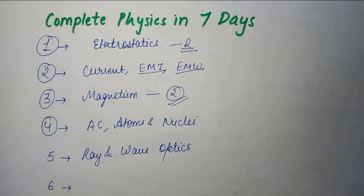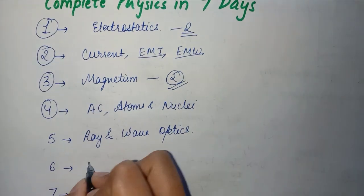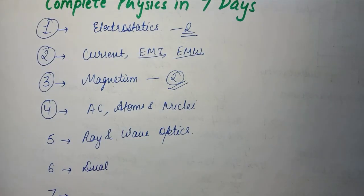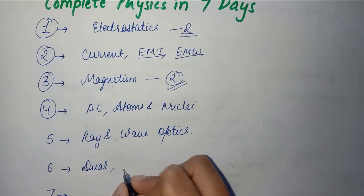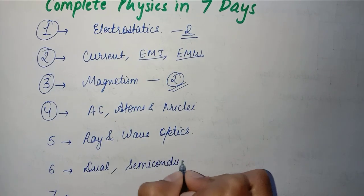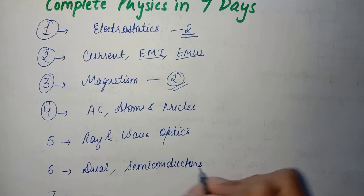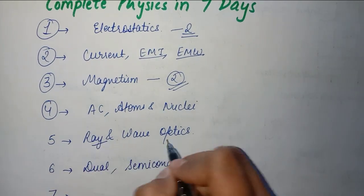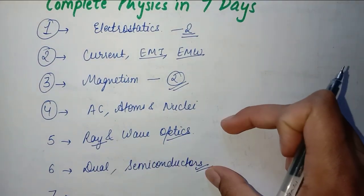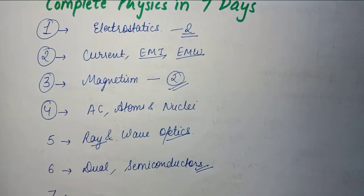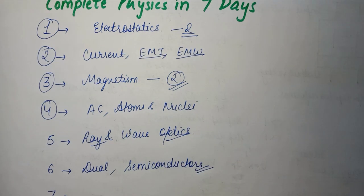After that, we will talk about the sixth day. On the sixth day you have two chapters - one is dual nature of matter and radiation, and you have semiconductors. Now the semiconductors chapter is most important. It is the most scoring and children have a lot of difficulty. So I have provided one-shot videos for these. You can see them. I will provide one-shot videos, but right now it is not possible because I am having my exams also.